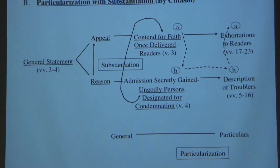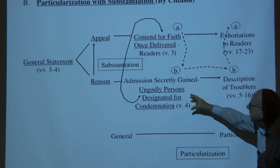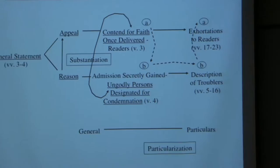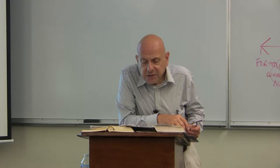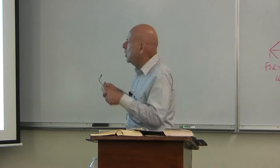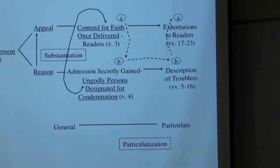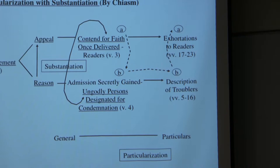He begins by particularizing both the ungodly persons, their ungodliness, and their condemnation. In the general statement he says they were designated long ago, and of course this is particularized when he talks about the models or examples presented long ago in the Hebrew scriptures and the prophecies regarding judgment upon the ungodly.